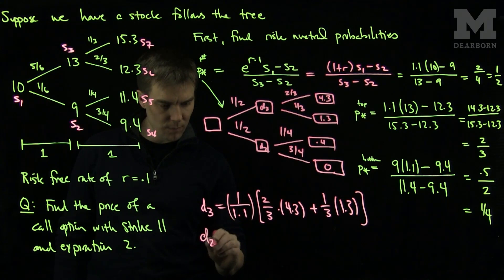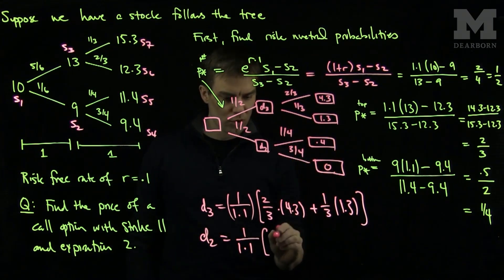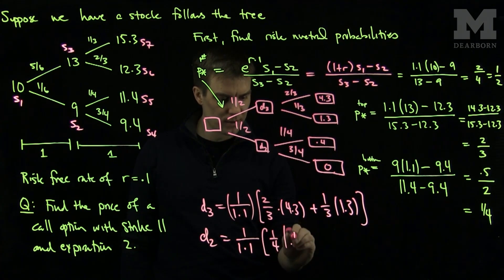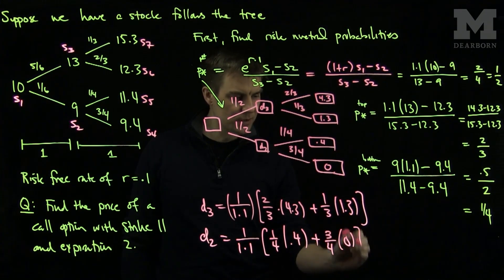And my d2 will be the discount, 1.1. And then the expected value over here, which will be 1 quarter .4 plus 3 quarters times 0.